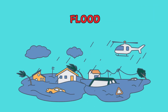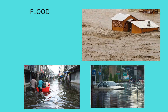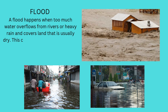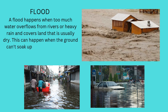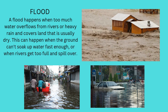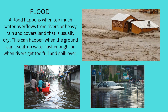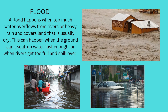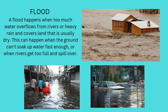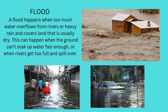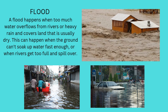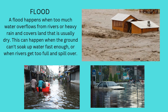Flood. A flood happens when too much water overflows from rivers or heavy rain and covers land that is usually dry. This can happen when the ground can't soak up water fast enough or when rivers get too full and spill over.